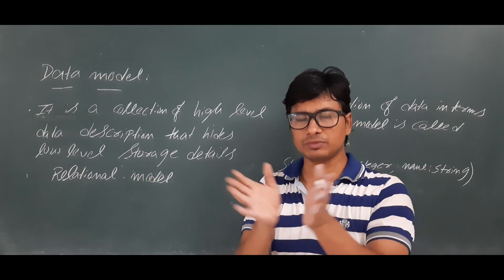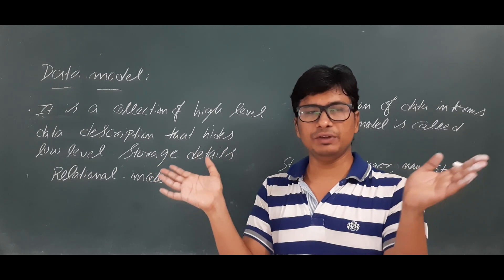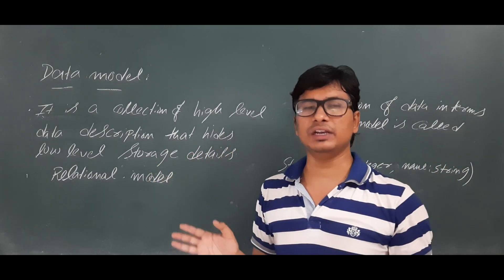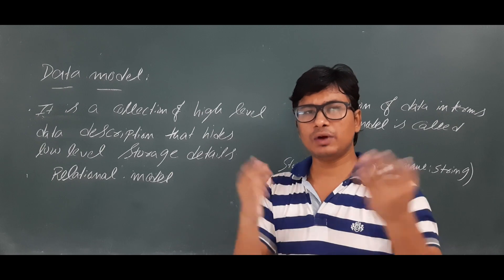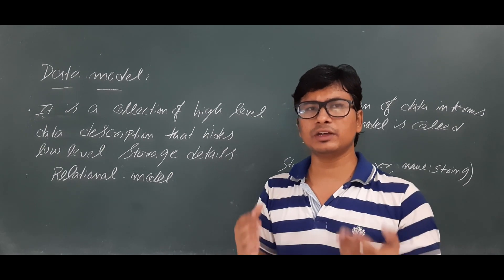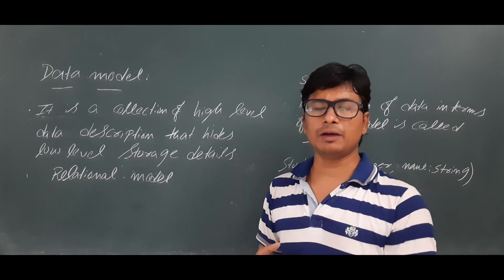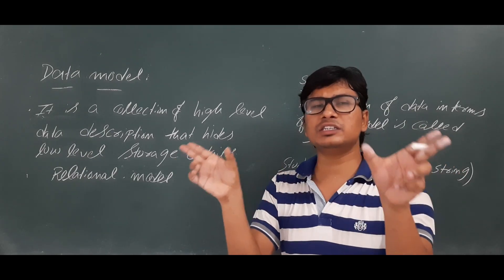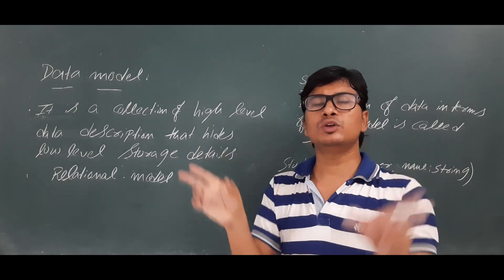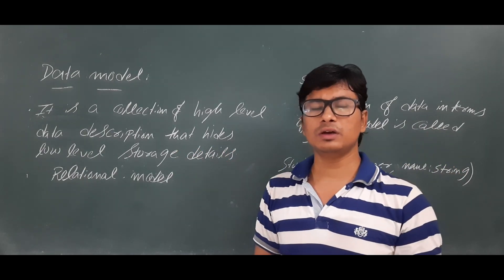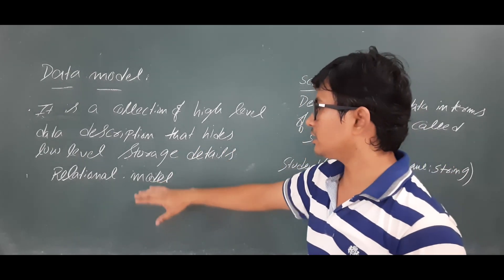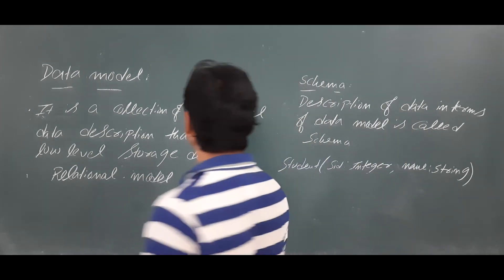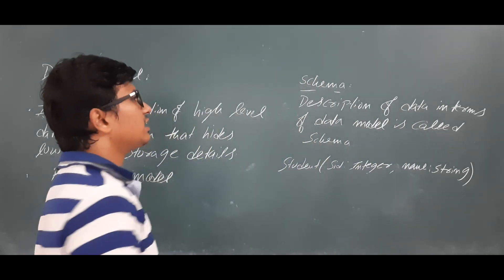In a relational model, everything is expressed in terms of relations. We will have an entity and we will have relationships — what is meant by entity and all these things I will discuss in the coming videos. You will have a relationship between two tables, and that is why it is called the relational model.